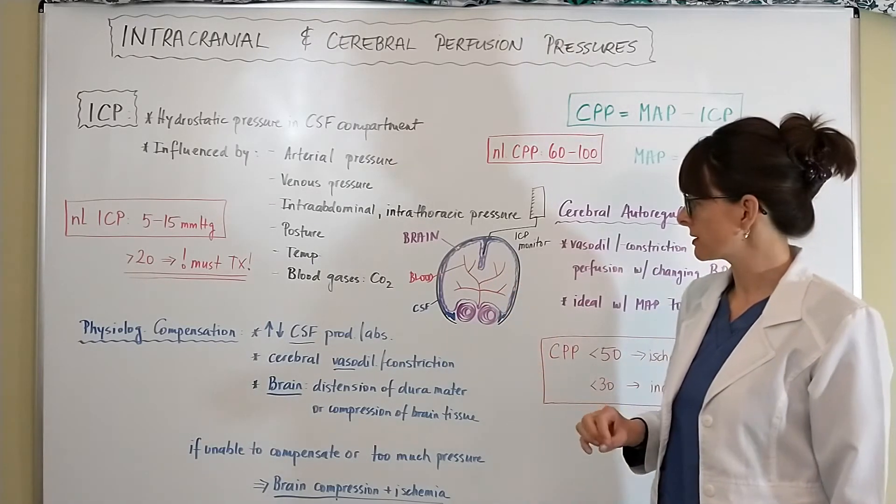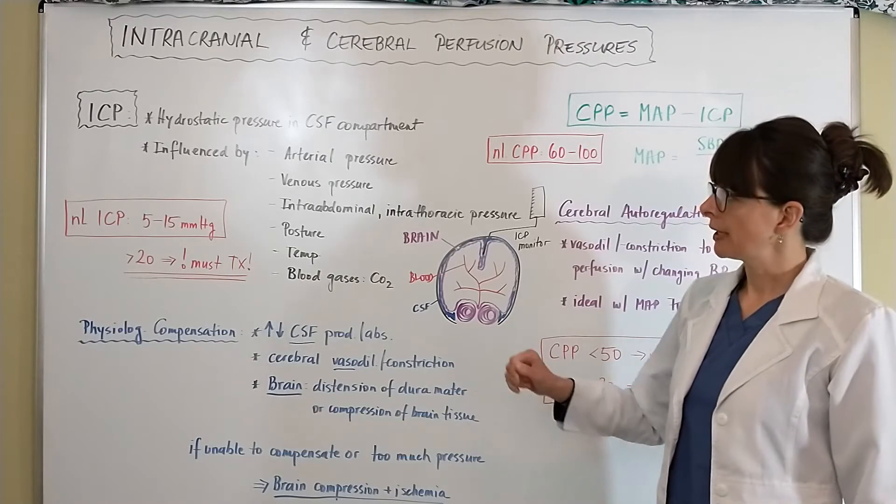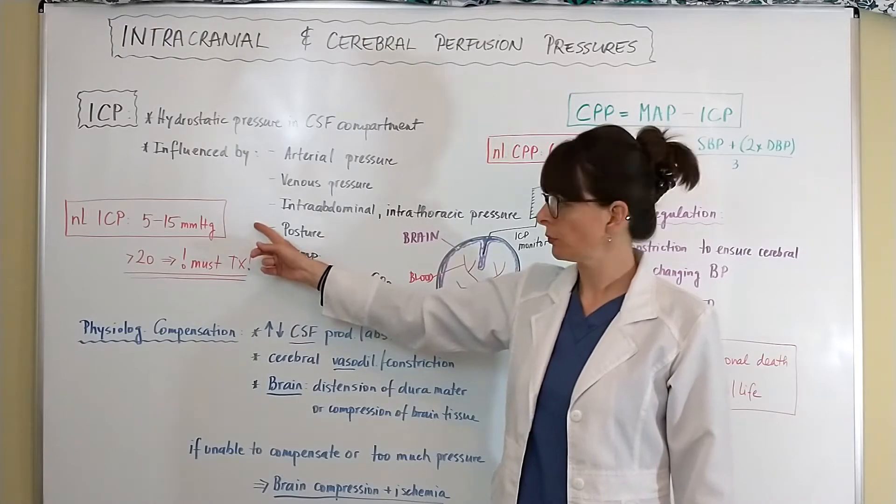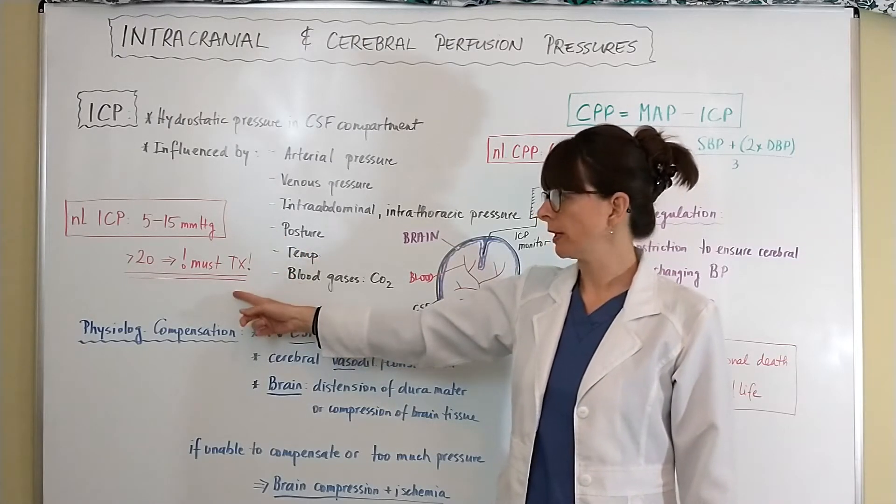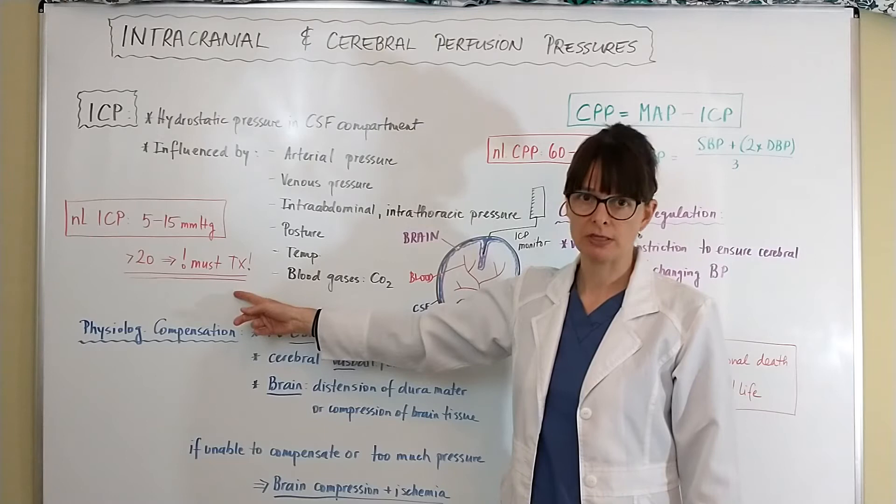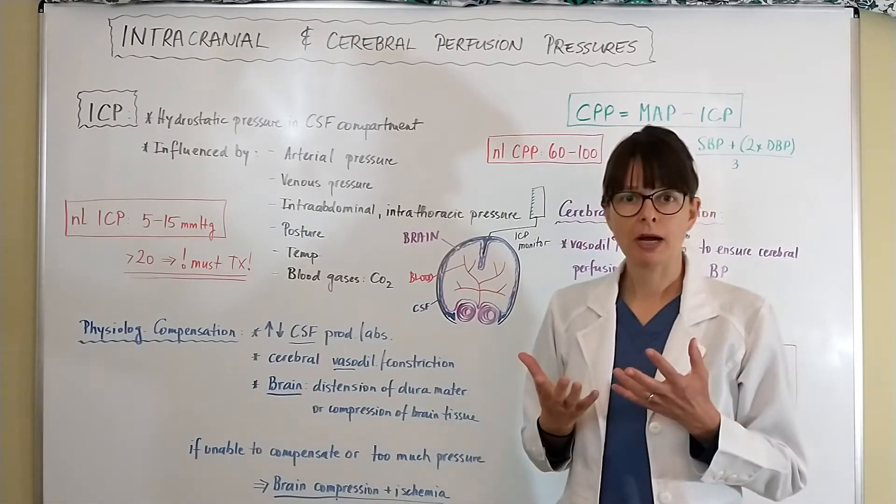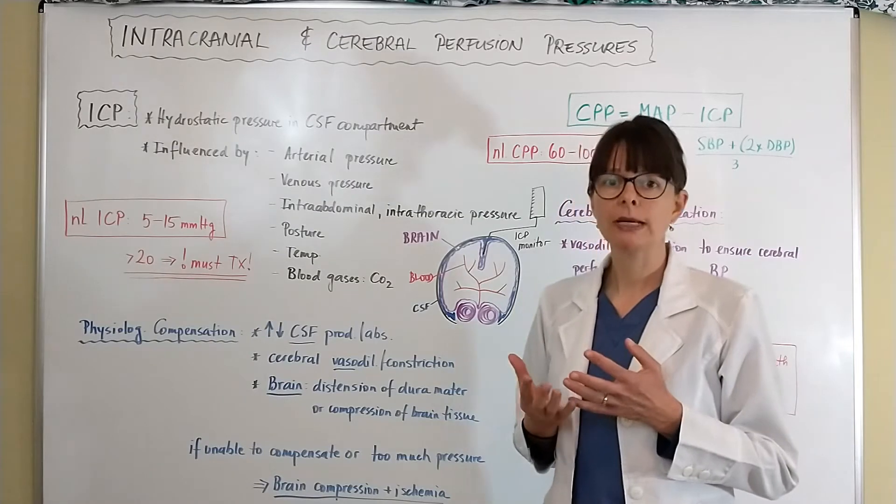Remember that the body can adjust things as needed. Now intracranial pressure is normally 5 to 15 millimeters of mercury. Anything above 20 must be treated because it can be life-threatening. Now typically our bodies have great ability to compensate for any kind of changes that occur.